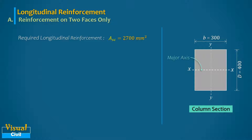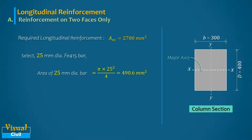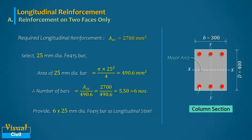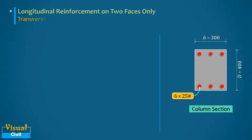Next, fix the number of bars. Select 25 mm diameter bars with a cross-sectional area of 490.6 mm² each. In columns, always provide an even number of longitudinal bars. Provide 6 bars of 25 mm diameter as longitudinal reinforcement. The total area of steel provided at two faces is 2944 mm².